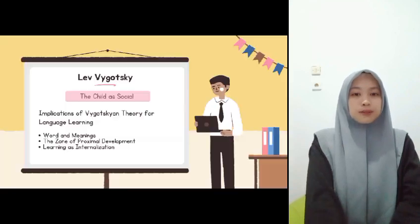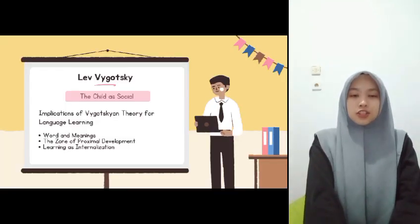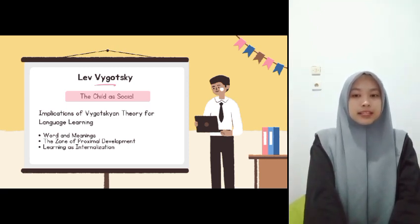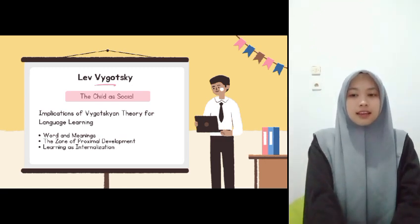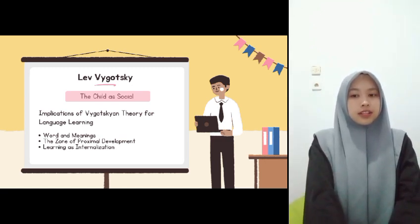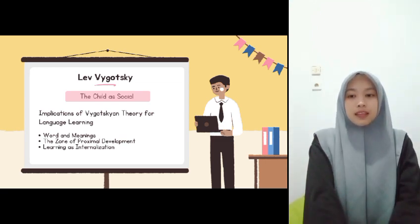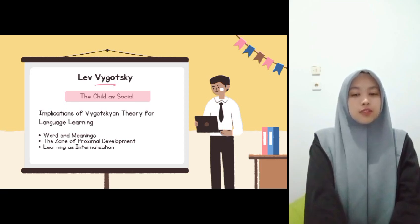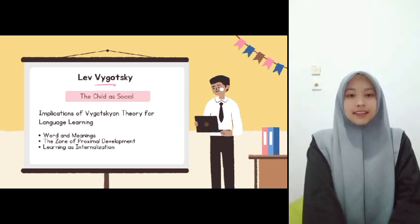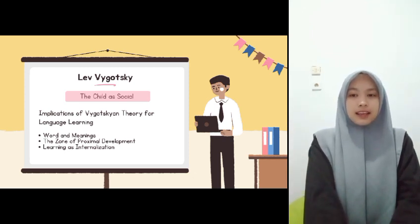The next theory is the theory of Vygotsky. According to Vygotsky, the child is social — he emphasizes the importance of language and other people in the child's world. The implications of Vygotskian theory for language learning are: first, word and meaning — the importance of the word as a unit has been downplayed by those who have developed Vygotskian theories. Second, the zone of proximal development. And third, learning as internalization.